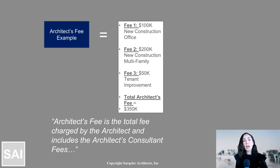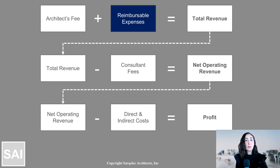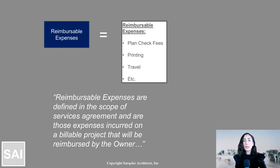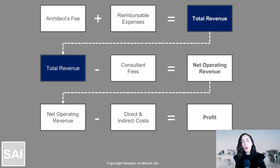Now let's go to the next line item in a P&L statement: your reimbursable expenses. On every project, an architect will typically, in their scope of services agreement, write what those reimbursable expenses are. It could be travel, printing documents, or plan check fees — there are numerous reimbursable expenses outlined in a contract with an owner. Those reimbursable expenses are not money that you're generating as an architect; those are out-of-pocket expenses that you're getting reimbursed for. So those reimbursables related to projects combine with your architect's fee to generate your total revenue.